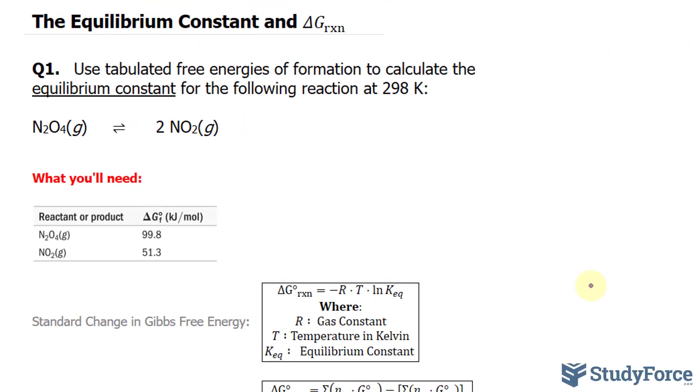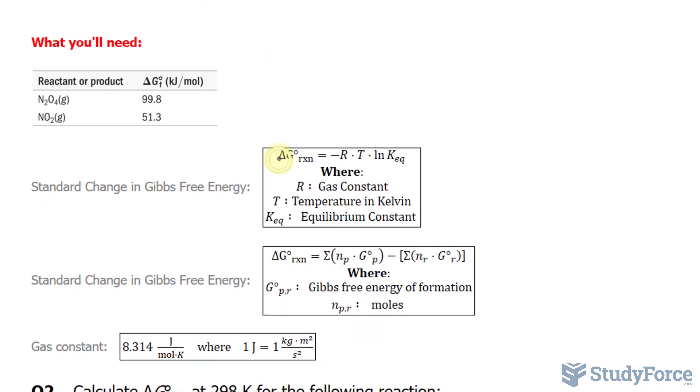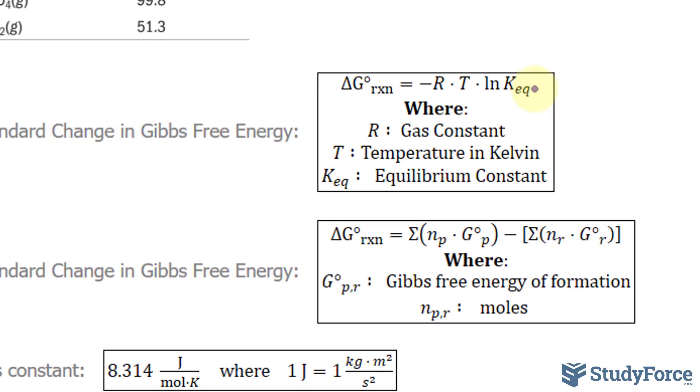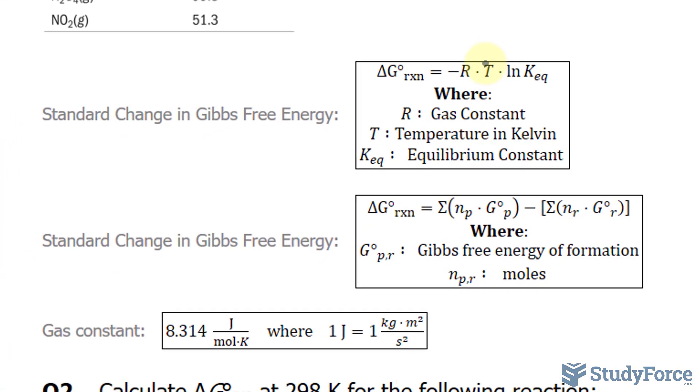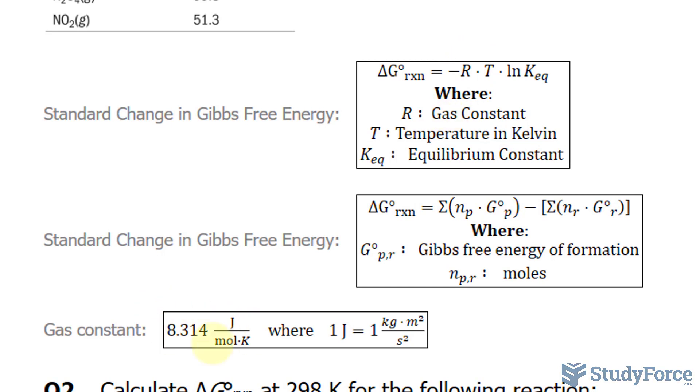The way delta G and the equilibrium constant are connected is by this formula, where delta G equals negative R times T times ln of K at equilibrium. We already know R, it's actually a constant, and it's stated right here.